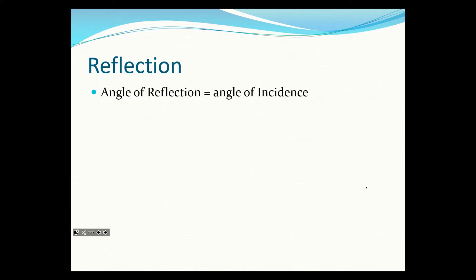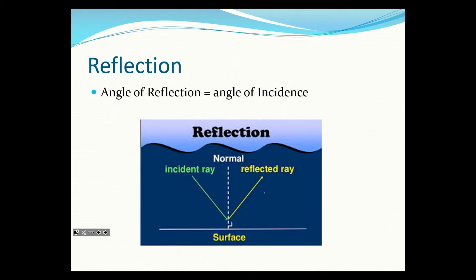Reflection is really easy. With reflection, our angle of reflection equals our angle of incidence - so this angle here will always equal this angle here. If this is 30 degrees, then this is 30 degrees. It reflects off the surface like that.